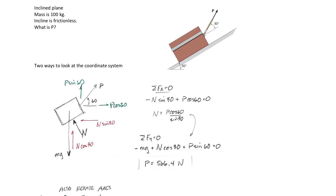Here's an inclined plane problem: a box sitting on a frictionless inclined plane with a mass of 100 kilograms, held in static equilibrium. We're looking for the force P to hold it there. Drawing a free body diagram, the box has mg, a normal force, and that force P pulling up. Defining x along the incline and y perpendicular, the normal has cosine and sine components, and P has P cosine 60 and P sine 60 components.